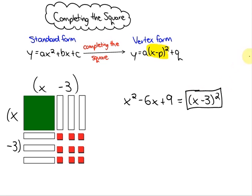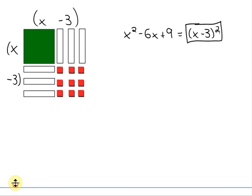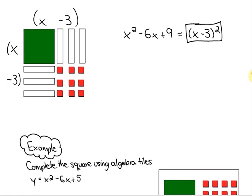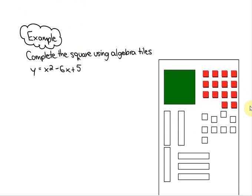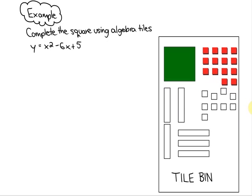What we're going to look at now is a more difficult example. We're being asked to complete the square using algebra tiles and the quadratic function we're looking at in standard form is y equals x squared minus 6x plus 5. And I'm going to be stealing tiles from the tile bin. If I want to represent x squared minus 6x plus 5, here's what I do.